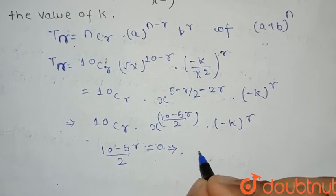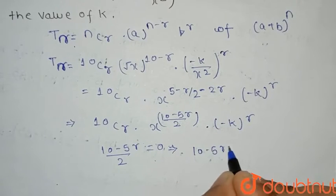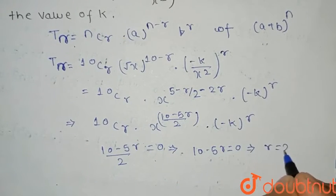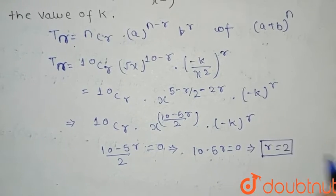That means 10 - 5r will become 0. From here, we have got r equal to 2. So the value of r is 2.